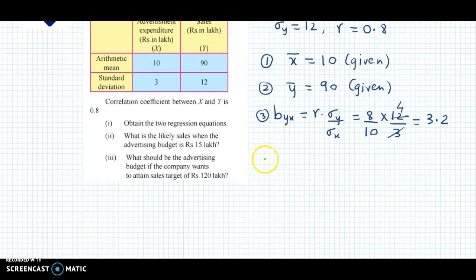Next we look at bxy, that is regression coefficient of x on y. So bxy is calculated as r × σx/σy. r is 0.8, which is 8/10, times standard deviation of x which is 3, over standard deviation of y which is 12. We cancel, 3 into 4 is 12, so that is 0.2.